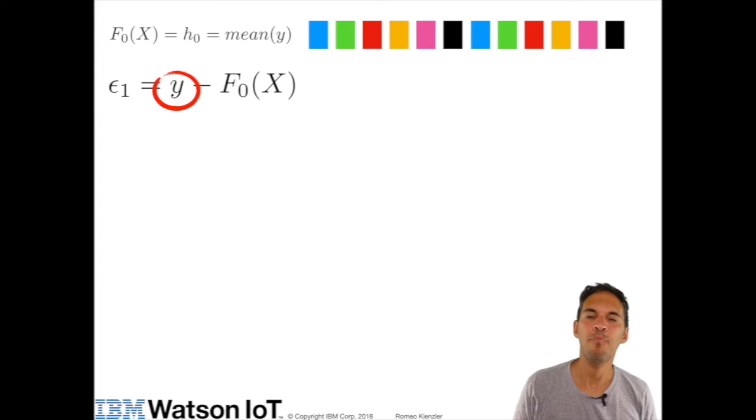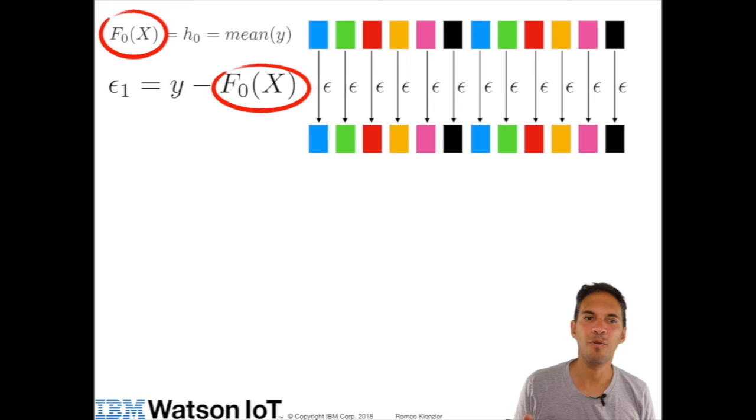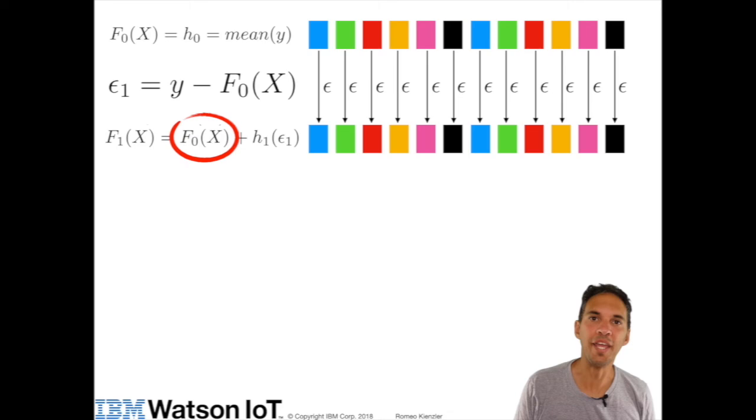So error 1 equals y minus f_0 of x. The output is basically a new training data set. Those are called residuals. It's basically the error of the previous model. So now we define a new model f_1 of x based on f_0 of x plus a new weak learner h_1 which we train on the residuals.